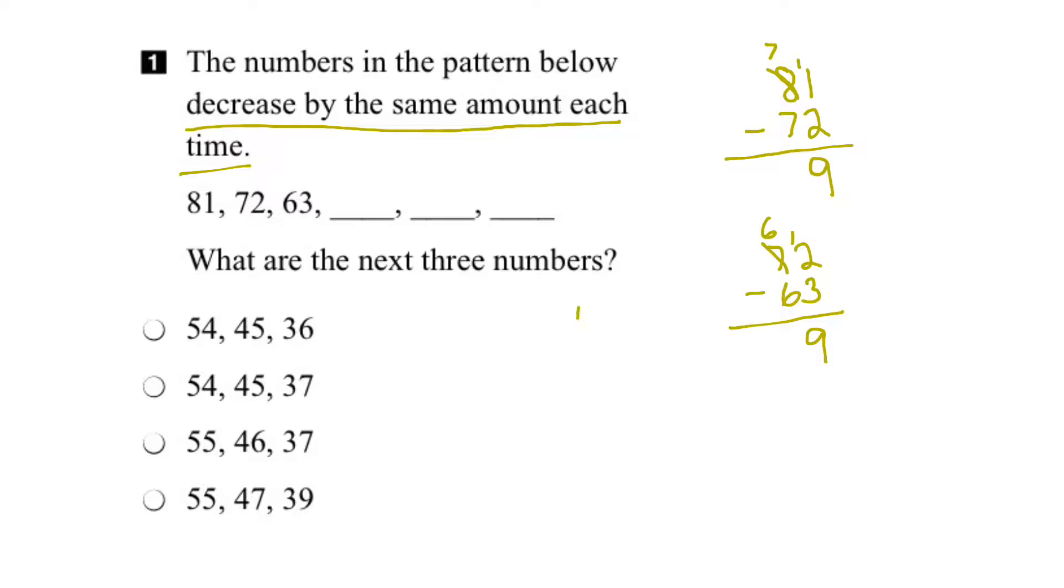So let's go ahead and do that. 63 minus 9. Again, I've got to borrow. That becomes a 5, and that becomes a 13. So 13 minus 9 will be 4. And then 5 minus 0 here would be 5. So the next number would be 54.